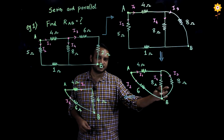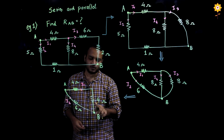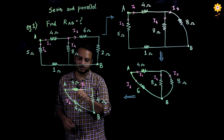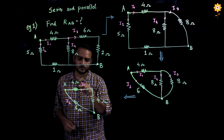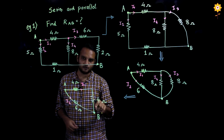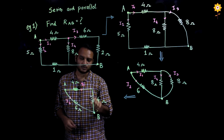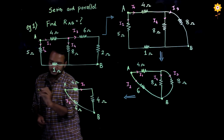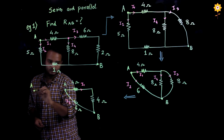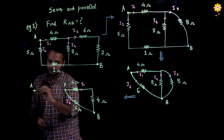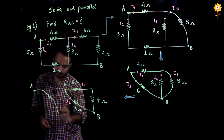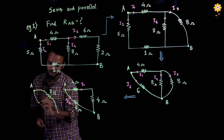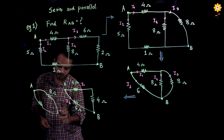These two resistances get combined to make one resistance of 4 ohm. Now, further when I analyze this network, I see current I1 flowing in this 4 ohm, and the same current will flow in this other 4 ohm. That makes these two resistances in series, so they add up to give 8 ohms. The circuit diagram will reduce: this 4 and this 4 combine to give me 8 ohms, and this 6 ohm will remain as it is. This is my point B.